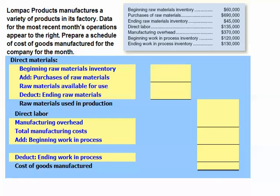Loan Pack Products manufactures a variety of products in its factory. Data for the most recent month's operations appear to the right. We need to prepare a schedule of cost of goods manufactured for the company. Recall that our schedule of cost of goods manufactured includes direct materials, direct labor, and manufacturing overhead.